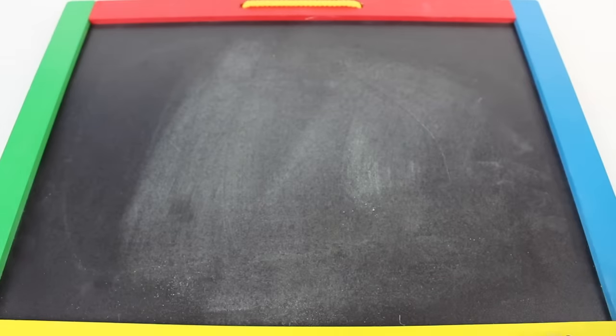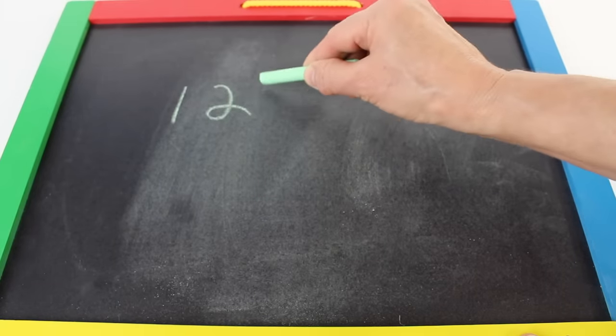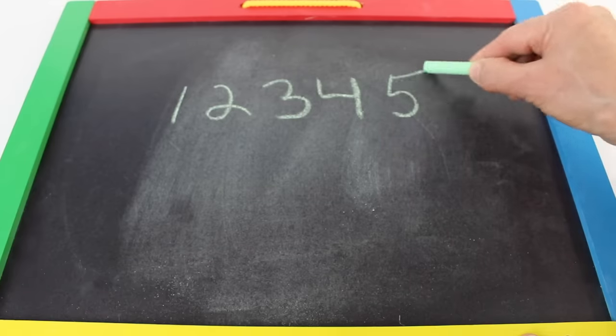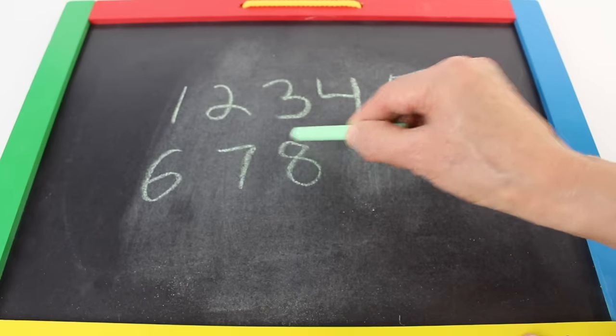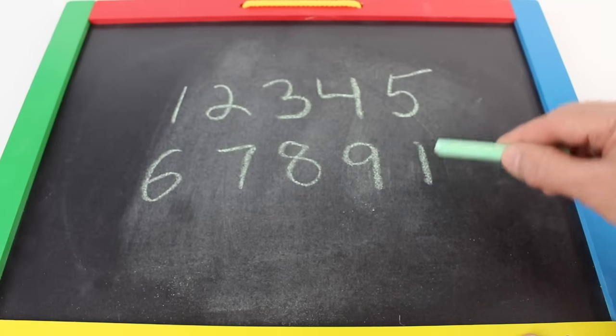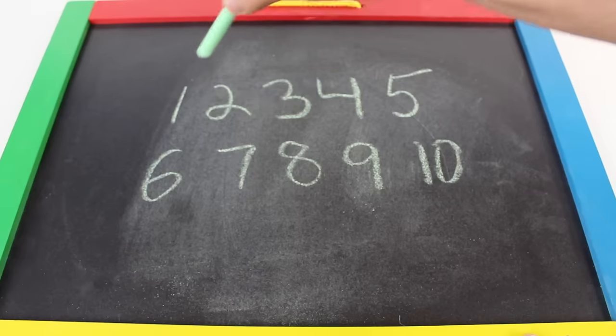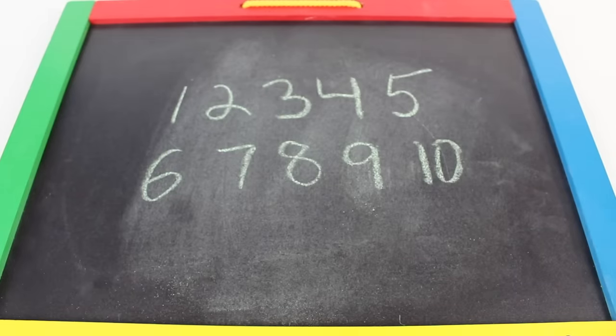Can you help me count to ten? One. Two. Three. Four. Five. Six. Seven. Eight. Nine. A one and a zero together is ten. One. Two. Three. Four. Five. Six. Seven. Eight. Nine. Ten. You just helped me count to ten.